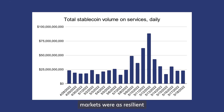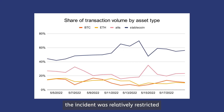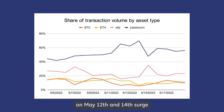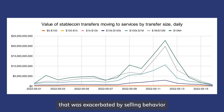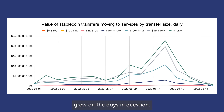Not all crypto markets were as resilient as Bitcoin, however. Stablecoins experienced a more broadly felt bank run on assets. Here we see the stablecoin transaction volumes, which started to spike close to the UST incident. The incident was relatively restricted to stablecoins because we can see the share of overall transaction volume they accounted for on May 12th and 14th surged to over 60%, up from the typical 40% of transaction volume. This was a broadly felt bank run that was exacerbated by selling behavior across the board. There were not just a few large transfers that created the surge in stablecoin value, but rather all types of transfers across the board grew on the days in question.